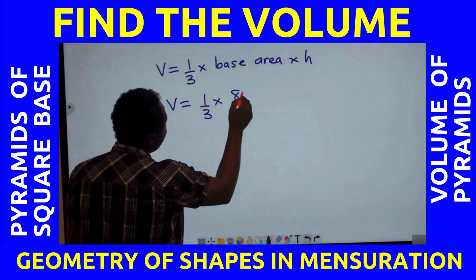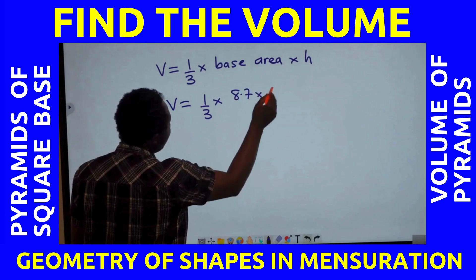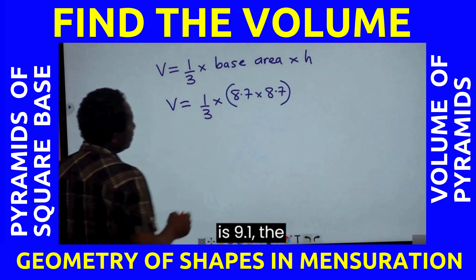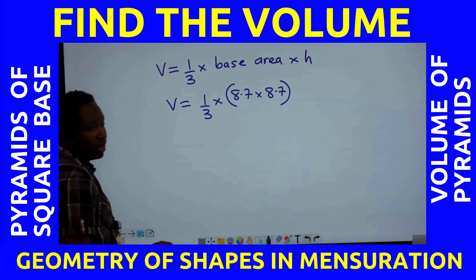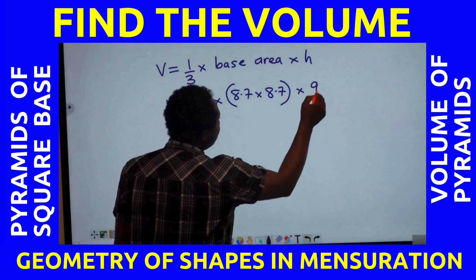The base is 8.7 multiplied by 8.7, since this is the same because it's a square, times the height is 9.1.